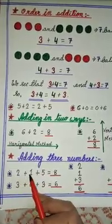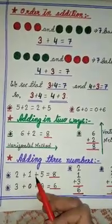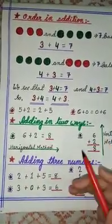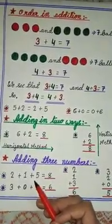2, 1 and 5. Children, it depends on you how you add. You can draw lines and you can count on your fingers also. Okay, because I know you can do the addition properly.